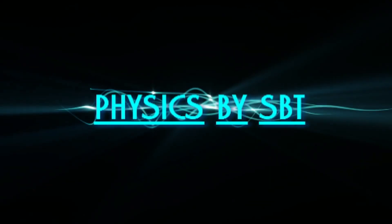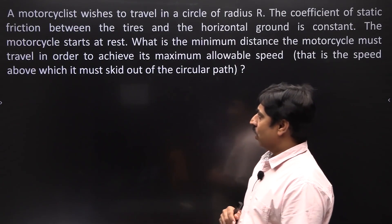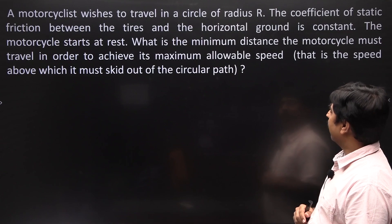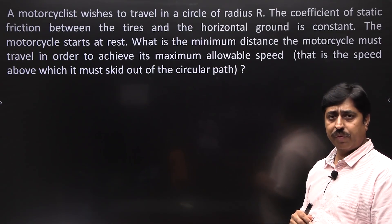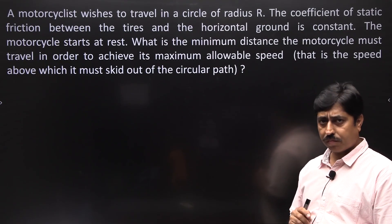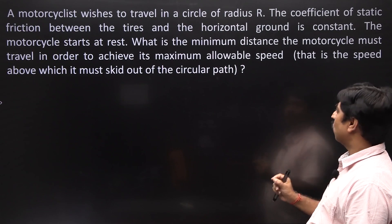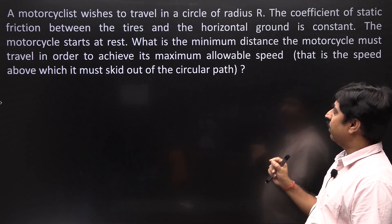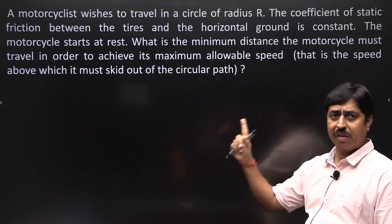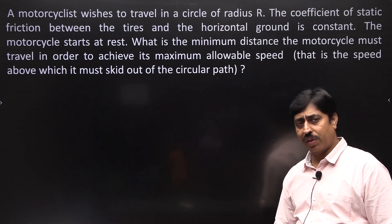Hello students, today we will solve a question from mechanics in which even if you understand the physical concepts very well, the mathematics part might get very tricky. Here is the problem: a motorcyclist wishes to travel in a circle of radius r and the coefficient of static friction between the tires and the horizontal ground is constant. The motorcycle starts at rest — what is the minimum distance it must travel to achieve its maximum allowed speed, that is, the speed above which it will skid out of the circular path?